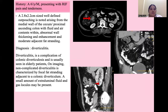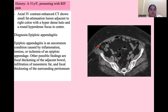Next is a case of a 61-year-old male presenting with right iliac fossa pain and tenderness. There is a well-defined outpouching arising from the medial wall of the cecum and proximal ascending colon with fluid and air contents within. Abnormal wall thickening, enhancement, and moderate fat stranding suggest diverticulitis. Diverticulitis is a complication of colonic diverticulosis and is usually seen in elderly patients. On imaging, it is characterized by focal fat stranding adjacent to the colonic diverticulum, and a small amount of extra-luminal fluid and gas locules may be present.